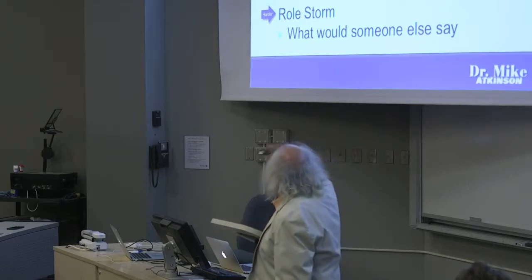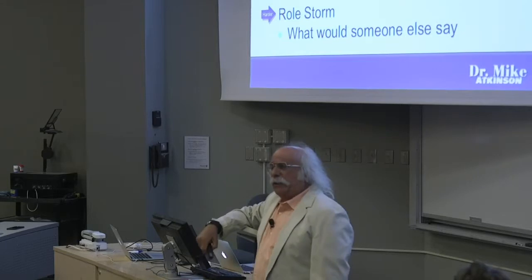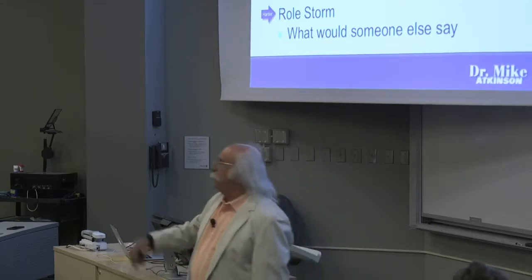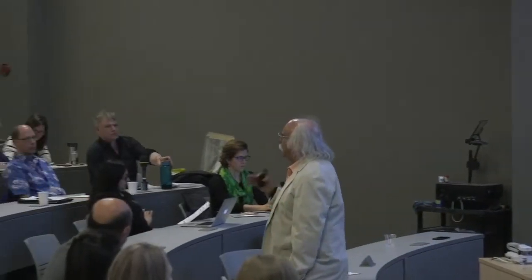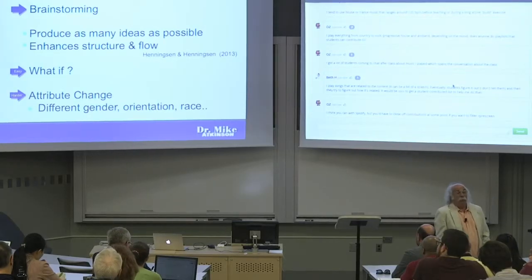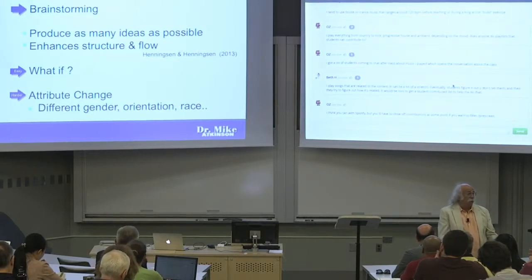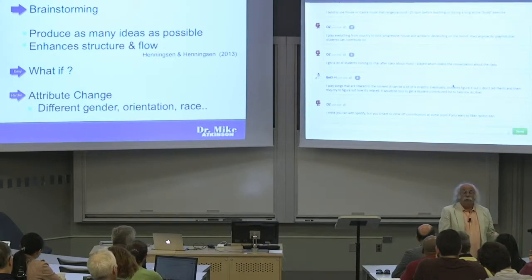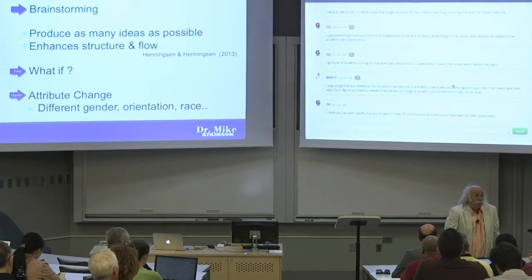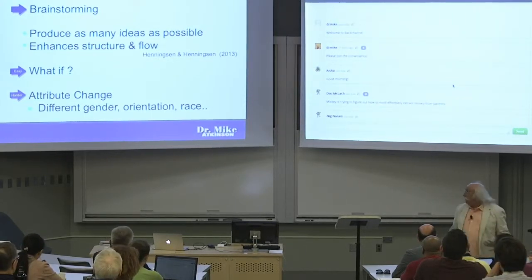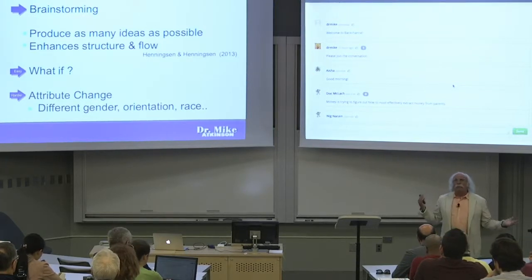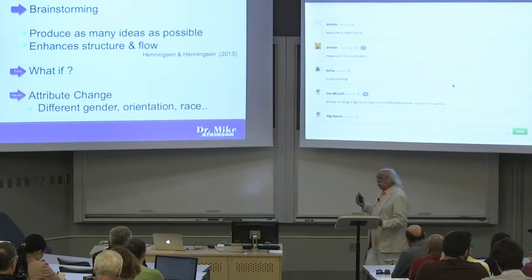There's some harder stuff. One's called a role storm — okay, I'm going to teach about this, but what would somebody else say? I'm teaching entrepreneurship and I'm going to say, what would Steve Jobs say about this? What would somebody else say if they were doing this kind of thing? Think about it that way because it's going to change how you present that. What if? What if the hippocampus gets damaged — are we going to be able to remember anything? You can also throw that out to the students. Attribute change is another harder one: think about how this information comes across if you're of a different gender, different sexual orientation, or different race.